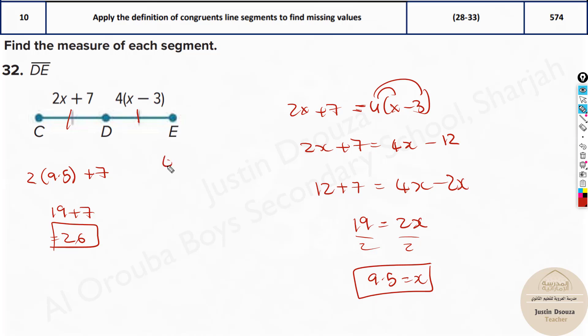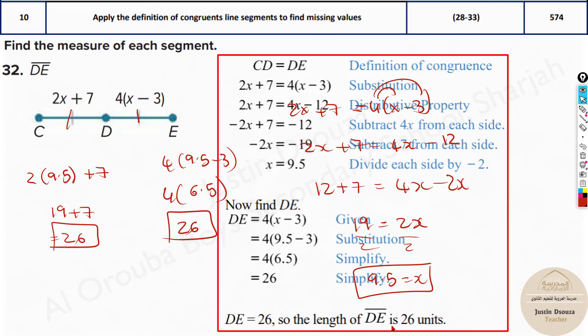And over here as well 4 times X is 9.5 minus 3. You can just do 4 times 6.5. 6 fours are 24, 5 times 4 is 2. So 24 plus 2 is 26. The answer is equal. You must get because they both are congruent. And that is the final answer. It's 26 units because the measurement is not mentioned in any unit.